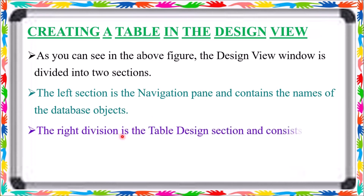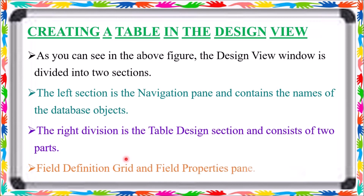The right division is the Table Design section, which consists of two parts. The right-hand side is the Table Design section. In the Table Design section, the first part is the Field Definition Grid and the second part is the Field Properties Pane, which is at the bottom. After opening the Design View window, the left section shows the Navigation Pane and the right section shows the Table Design area, divided into the Field Definition Grid and Field Properties Pane.